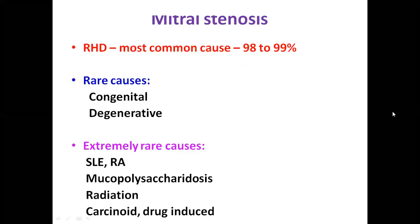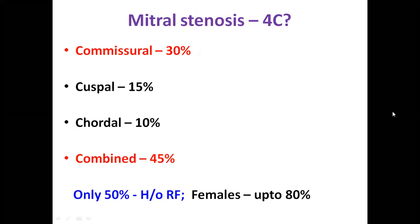Starting with mitral stenosis, the most common cause is rheumatic, accounting for 90 to 99 percent of cases. The most common problem in mitral stenosis is commissural fusion, seen in about 30 percent. Cuspal thickening alone can cause mitral stenosis, and chordal fusion may lead to significant obstruction. Most often it is a combined pathology. History of rheumatic fever is obtainable in only 50 percent of patients.